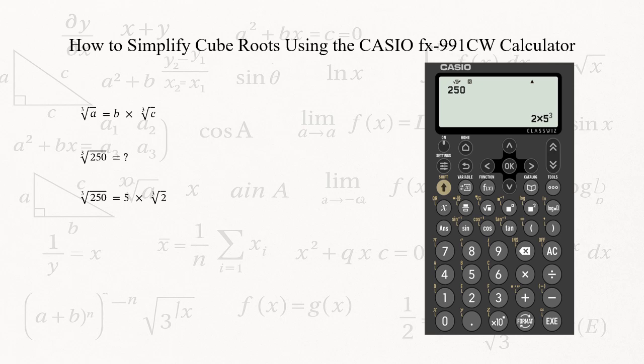So, the cube root of 250 equals 5 times the cube root of 2. This works because cube roots let you pull out primes grouped in 3s. The calculator's prime factorization does the hard work for you.